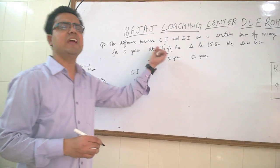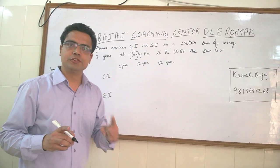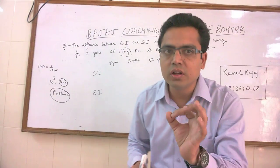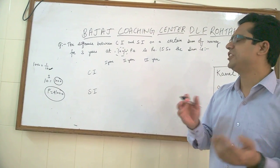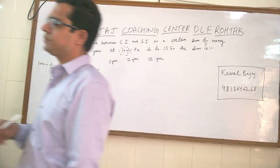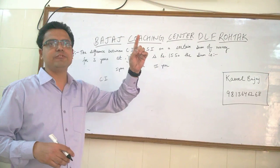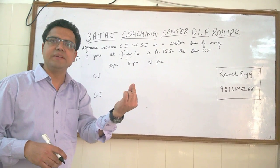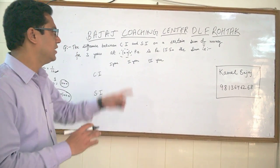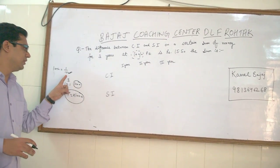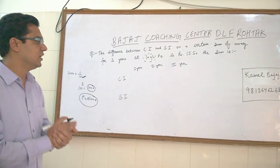Suppose the rate was 25% — 25% fraction is 1 by 4, so the denominator is 4, so we will consider principle as 4 cube, which is 64. Suppose the rate was 5%, the fraction will be 1 by 20, then we will consider 20 cube, which means 8000. But the rate is 10%, fraction is 1 by 10, so we will consider principle as 10 cube, that is 1000, to make our calculations easy.